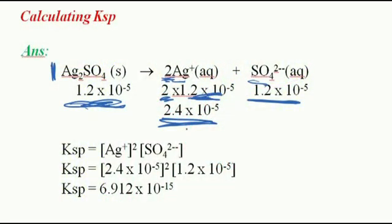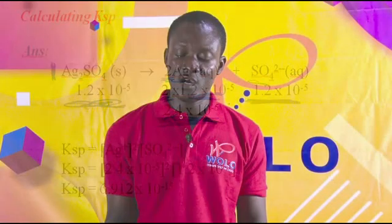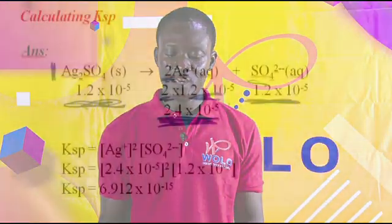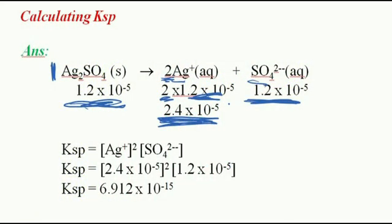So now we have the concentration of the various ions, and these ions are the ions that are going to be used to determine the Ksp. So first, we write our Ksp formula. Now the various ions raised to the power their moles. So 2 is what we have there, and then we have the sulfate.